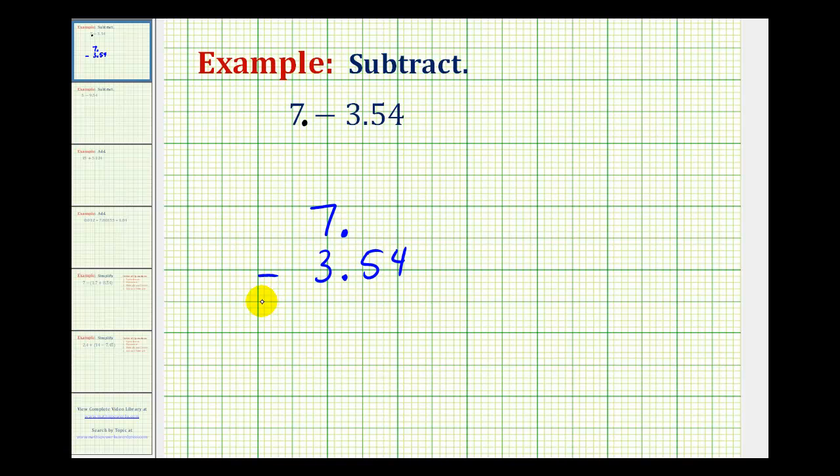And now that we have the place values lined up, we can add zeros to the right of the decimal point. So we can put a zero here and a zero here, and notice it still has the value of seven.